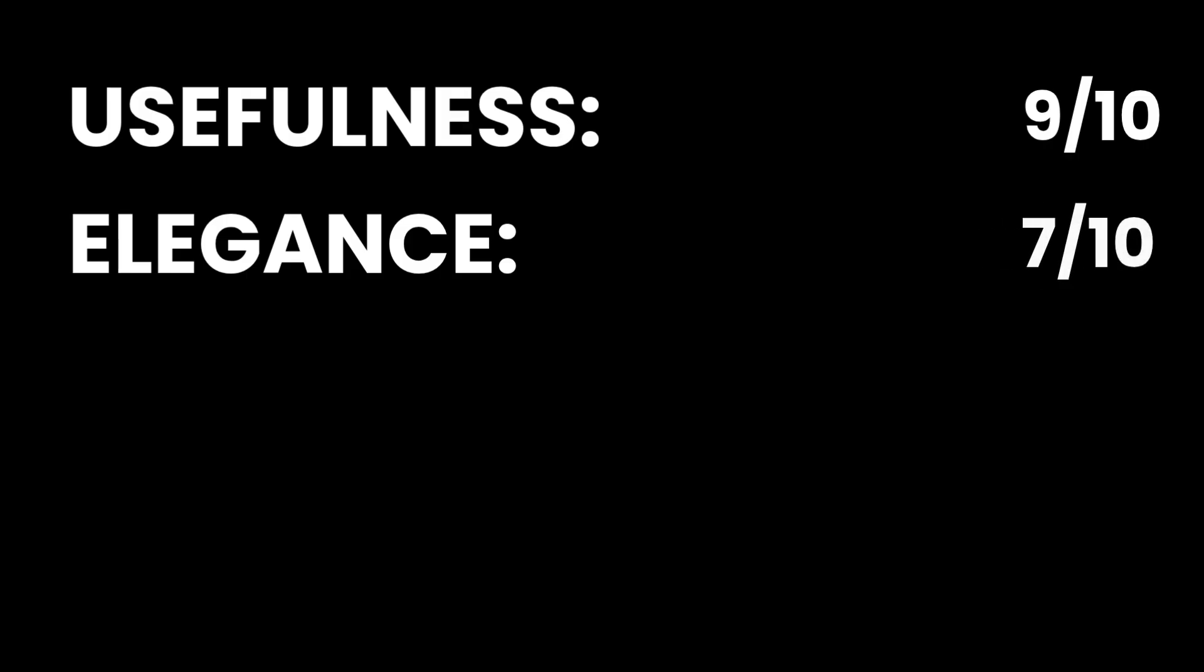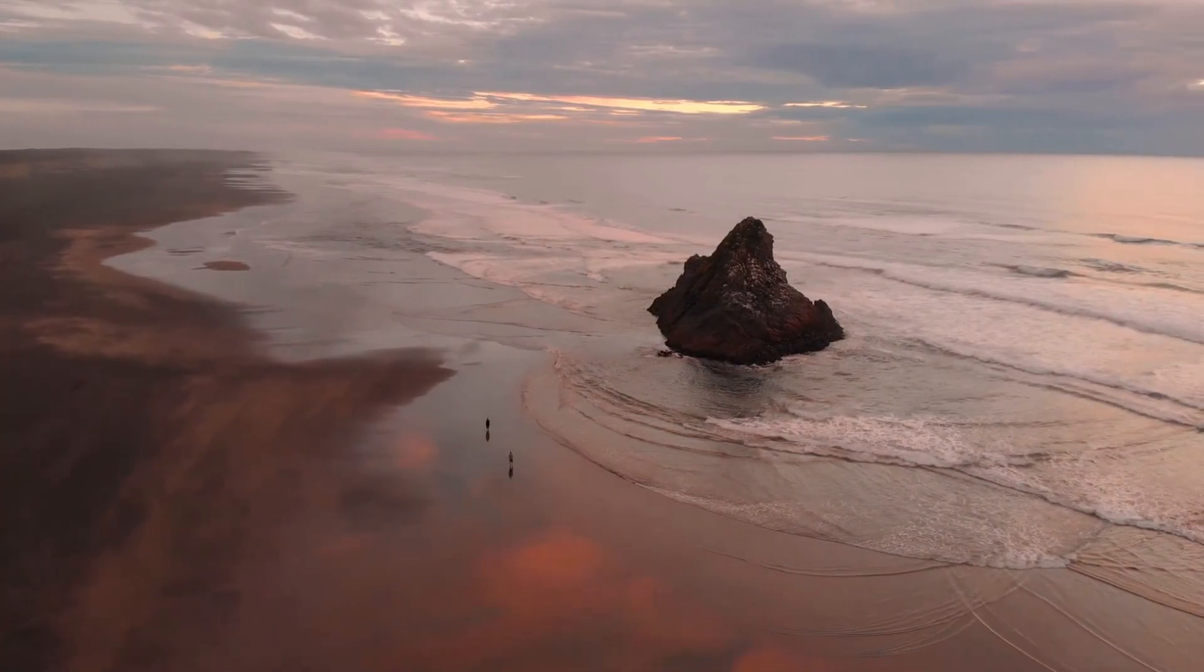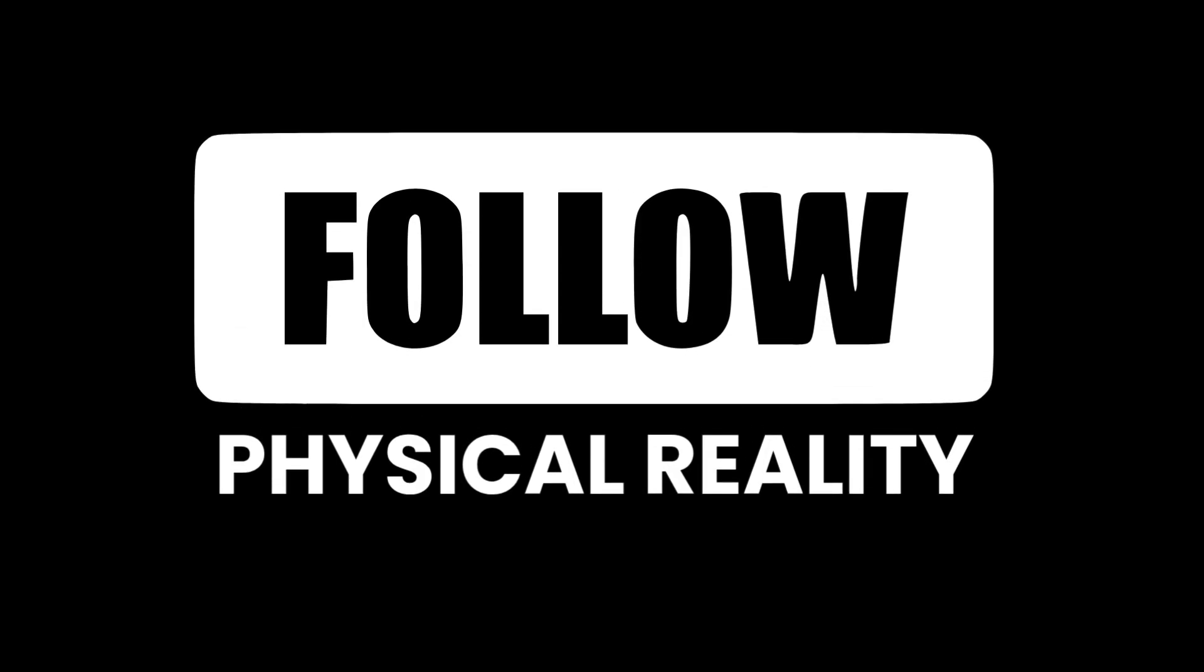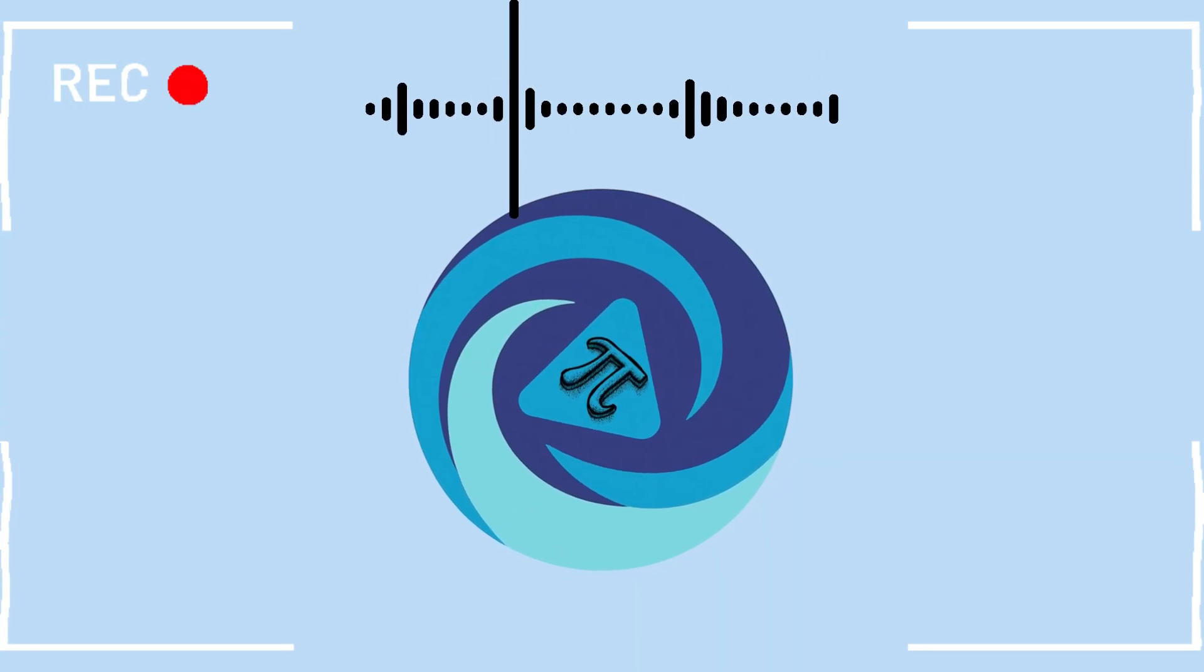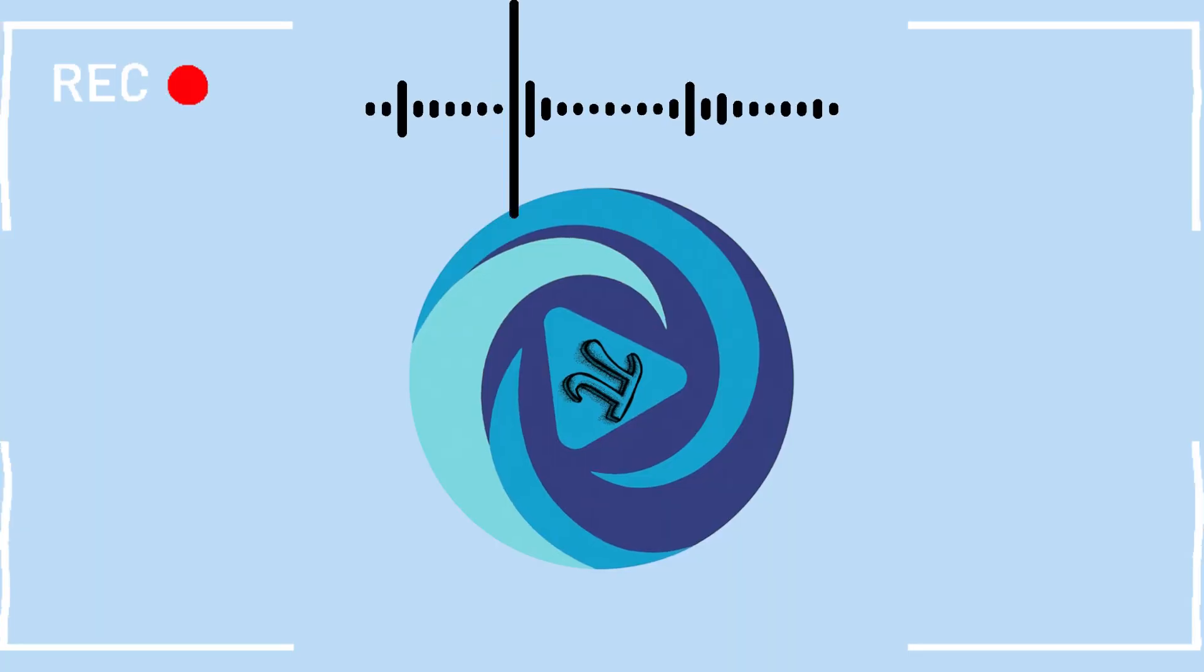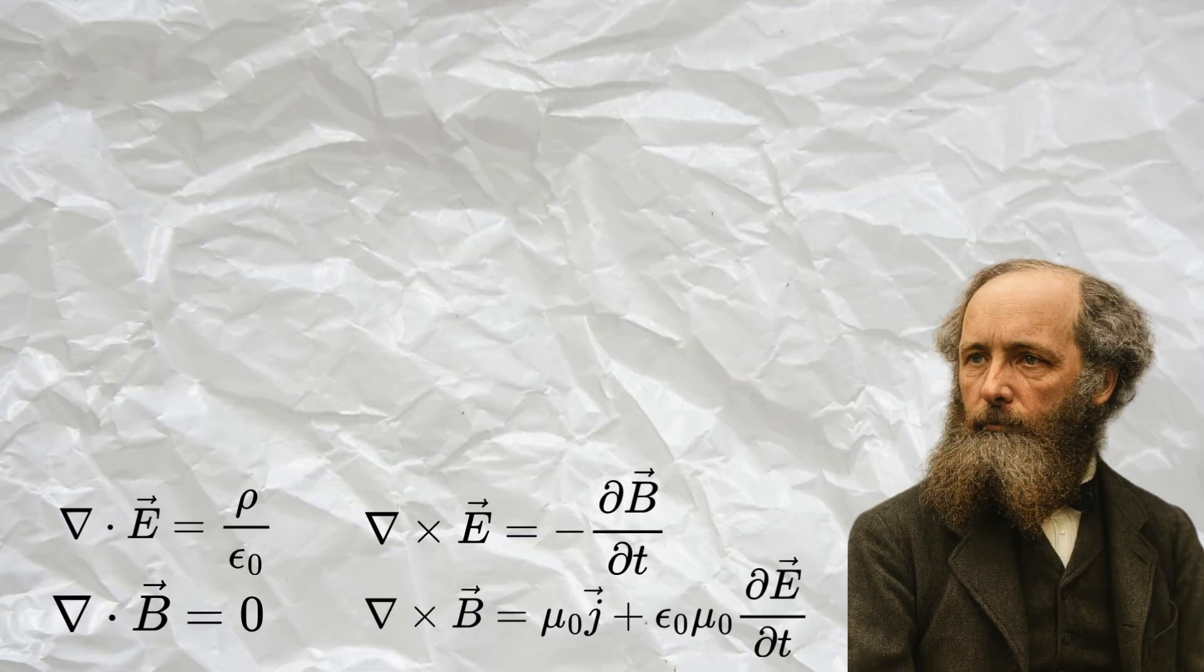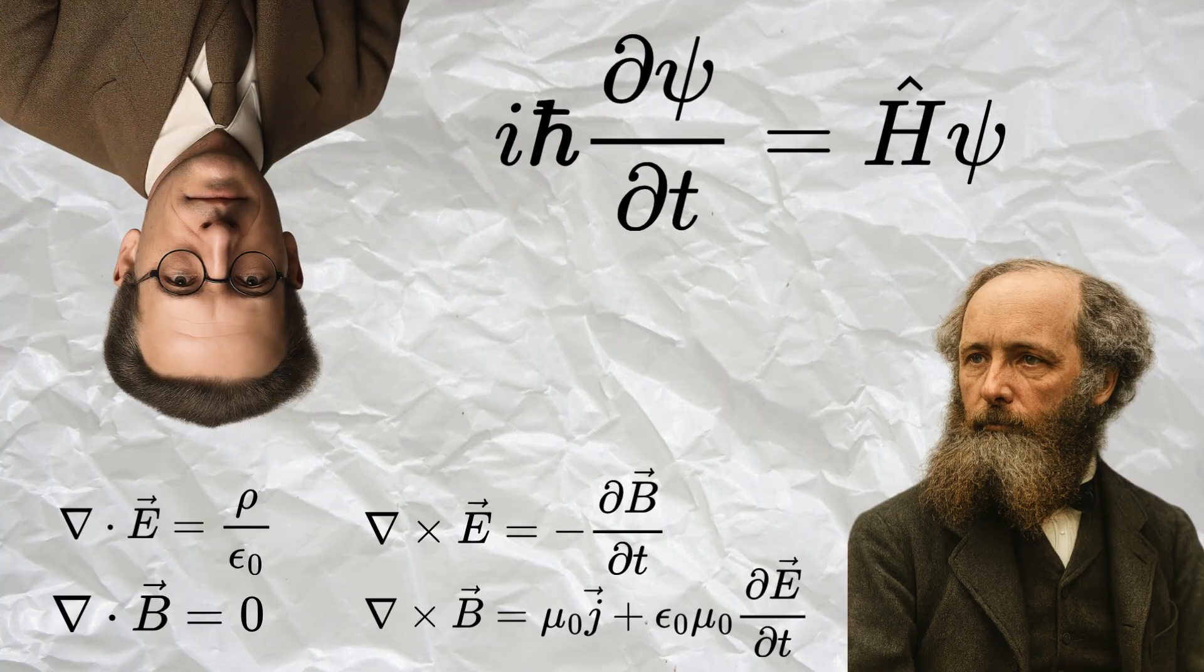For theoretical beauty, I give it a 7. Mathematical physics is undoubtedly fascinating, but its rigor is often subordinate to the need to follow physical reality. This can make it, at least in some cases, less elegant than other branches of pure mathematics. That said, some results, like the solutions to Maxwell's equations or the Schrödinger equation, do possess their own kind of elegance and beauty.